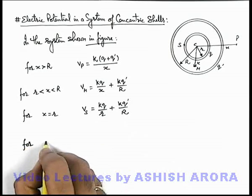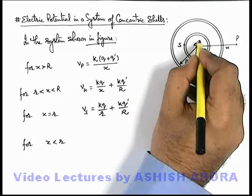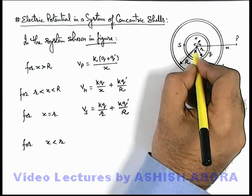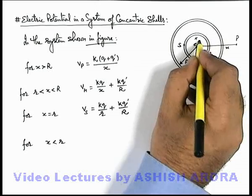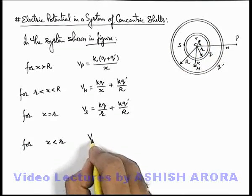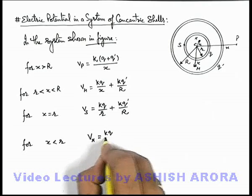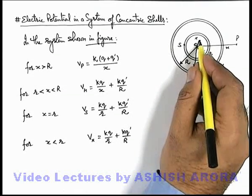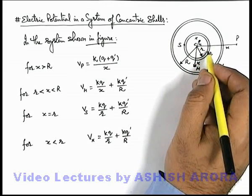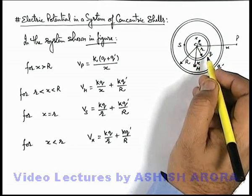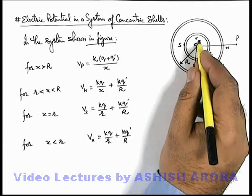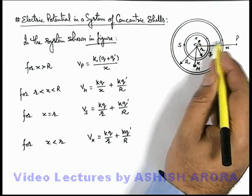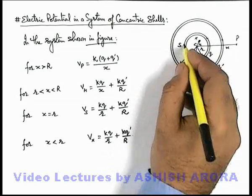If a point is located at distance x inside the inner shell, x < small r, then the potential at that point is simply kq/r + kq dash/R. This is because at every interior point of a shell, the potential is exactly equal to that of the surface on which charges are uniformly distributed. So due to the inner shell, potential at x equals that of its surface, and due to the outer shell, it equals that of its surface. The net potential at x equals that of point S.